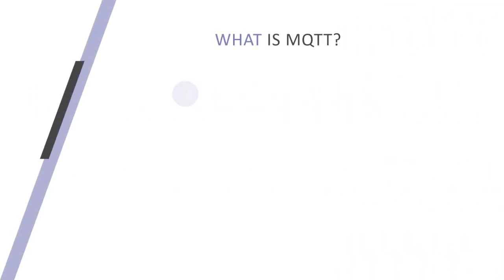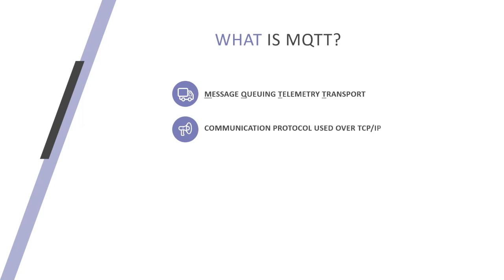Now what is MQTT? MQTT stands for Message Queuing Telemetry Transport. It is basically a communication protocol used over TCP/IP. It is fairly a new protocol that is quite popular in the IoT or the IIoT space. In the industrial space it can be used to communicate between two or more machines or between a machine and a SCADA system.